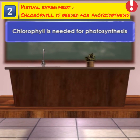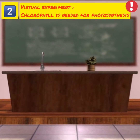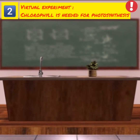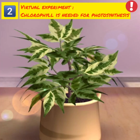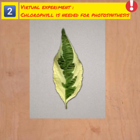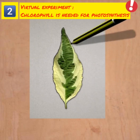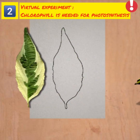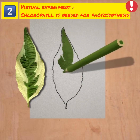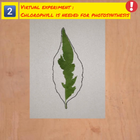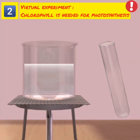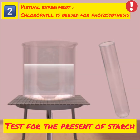Chlorophyll is needed for photosynthesis. This experiment shows that chlorophyll is needed for photosynthesis. Pluck a variegated leaf that is exposed to sunlight. Trace the outline of the leaf to show the green and non-green areas. Then, the leaf is tested for the presence of starch.